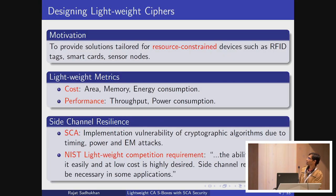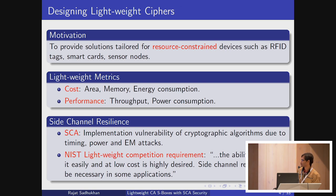The first thing that motivated us for this work is the NIST lightweight competition requirement and to provide a solution for resource-constrained devices for IoTs. For lightweight block ciphers, the common metrics from a cost perspective are area, memory, or energy consumption, and from a performance perspective, throughput and power consumption. Most of these metrics are orthogonal to each other — increasing area improves throughput, but better throughput may degrade area. For our work, we focused on area, as the lightweight competition requires low cost, and side-channel resistance is necessary for the application.